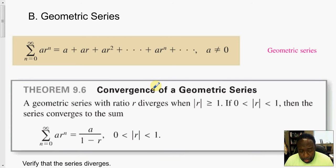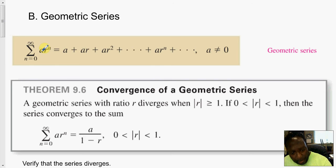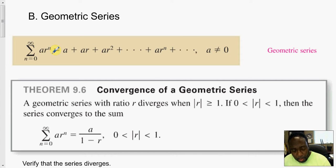Geometric series. Within this section on series and convergence, the second type of series we want to talk about is a geometric series. The geometric series consists of a fixed number A with a ratio. In fact, you can use this to even build the so-called golden ratio.